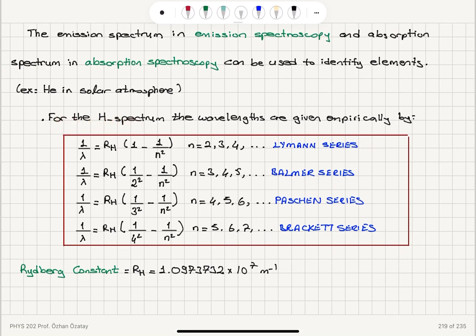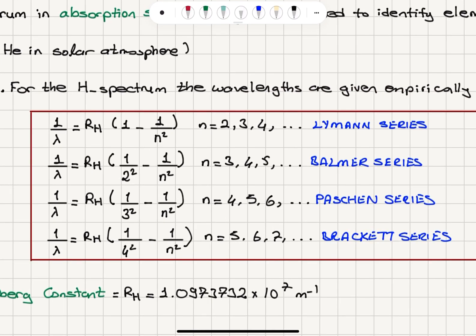For the hydrogen spectrum, the wavelengths are given empirically by these equations. 1 over the wavelength is Rydberg's constant times 1 minus 1 over n squared, where n is the energy level quantum number corresponding to the energy level where the emission or absorption started. For n equals 2, 3, and 4, these correspond to Lyman series.